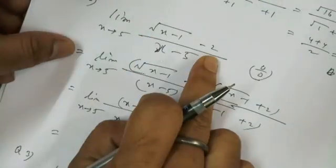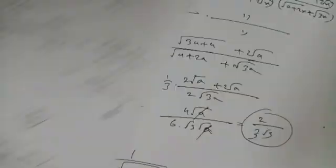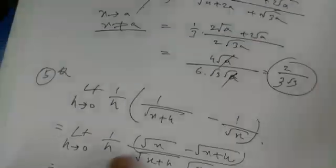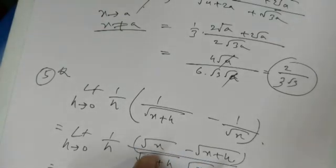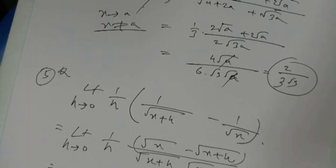This is rationalization of the numerator. Multiply numerator and denominator by (√x + √(x + h)). So in the numerator multiply by (√x + √(x + h)), and in the denominator by the same quantity. Then evaluate to get the answer.